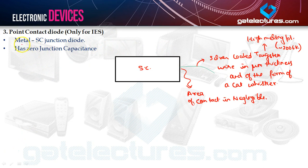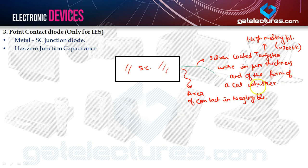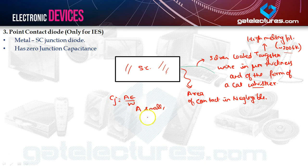Let's look at another type of diode: the point contact diode, which is basically a metal-semiconductor junction diode. The metal is a silver-coated tungsten wire of micrometer thickness in the form of a cat whisker. The area of contact is nearly negligible, and tungsten has a high melting point of nearly 2000 Kelvin. Since the area A is very small, junction capacitance CJ is also very small.